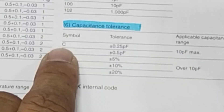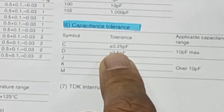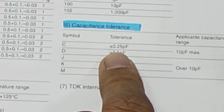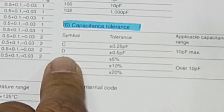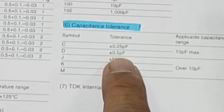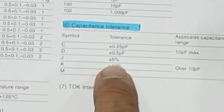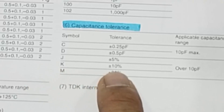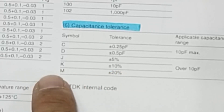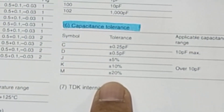For tolerance codes on the last digit: C means ±0.25 (not percent, just in capacitance picofarad), D means ±0.5 picofarad from total value, J means ±5%, K means ±10%, and M means ±20%.